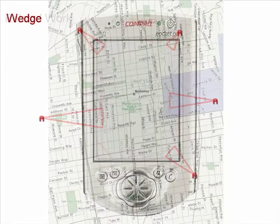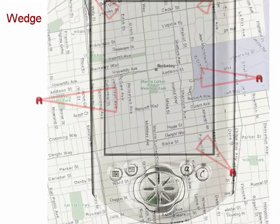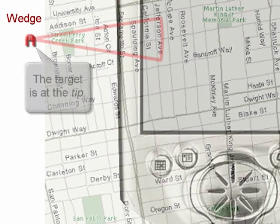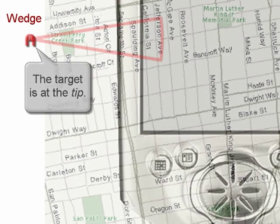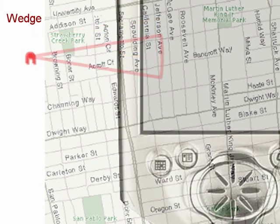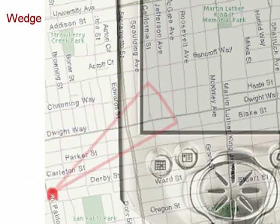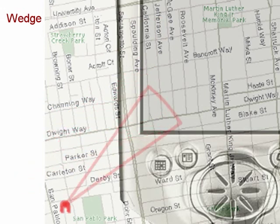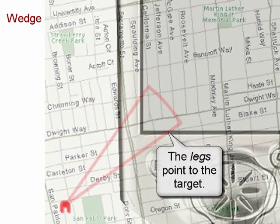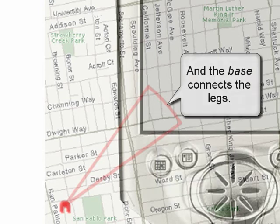Wedge combines the benefits of Halo and arrow-based techniques. The tip of each wedge is located on the off-screen object, while its two corners are located on-screen. Wedge conveys location awareness through its pair of legs pointing toward the target. The legs are then connected with either a straight or curved base.